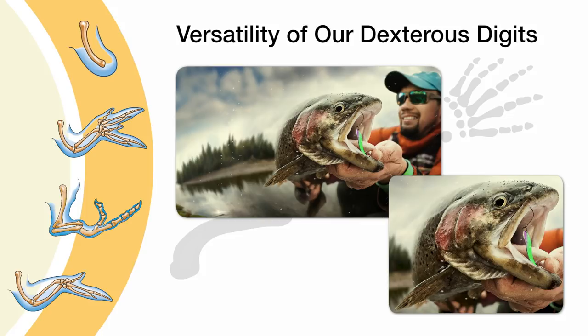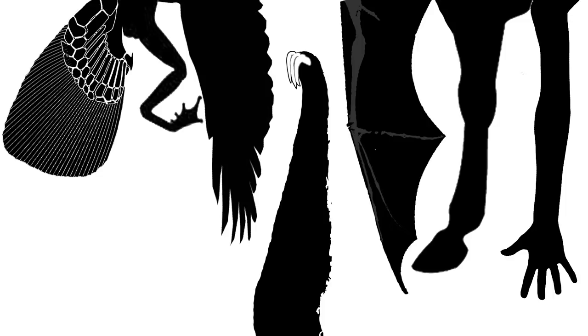Developmental biologists have been long fascinated with limb development, in part due to the obvious homology that exists between the limbs of different vertebrate species. The curiosity lies in the hope that understanding the evolutionary history of the development of fish fins to the primate's opposable thumb might reveal how terrestrial tetrapods came to be.